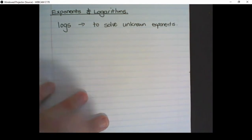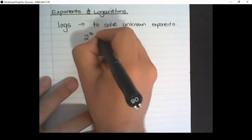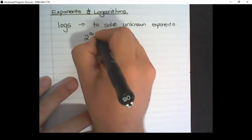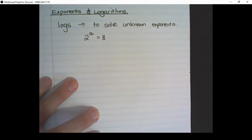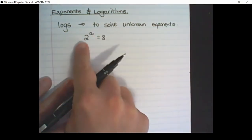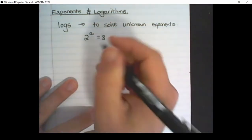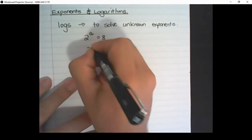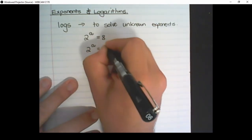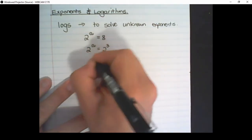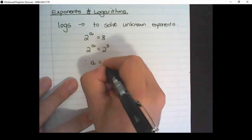For example, if I have 2 to the power of a is equal to 8, we want to write 8 in terms of 2 to the power of something in order to solve a. In the lower grades we learned that 8 is 2 to the power of 3, therefore a is equal to 3.